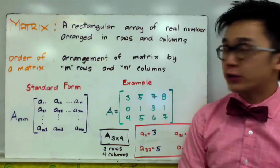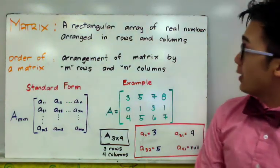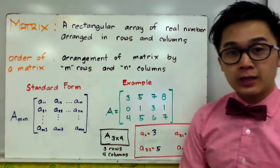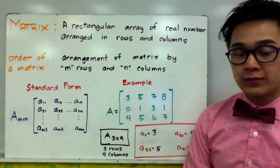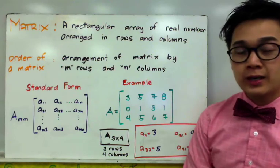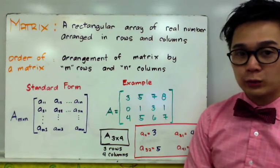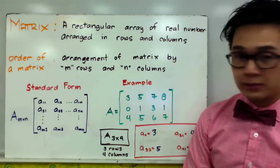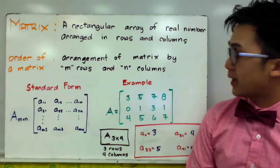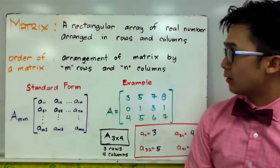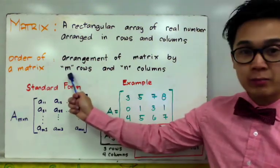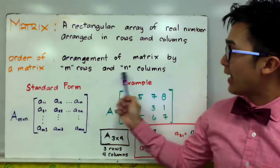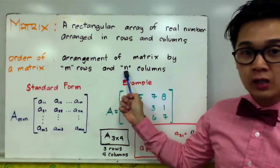A matrix is a rectangular array of real numbers arranged in rows and columns. It is very important to know how to read the order of a given matrix, as this will help in evaluating and simplifying matrices. The order of a matrix means an arrangement by m rows and n columns, where m is the number of rows and n is the number of columns.